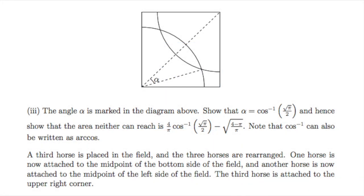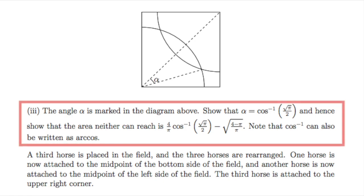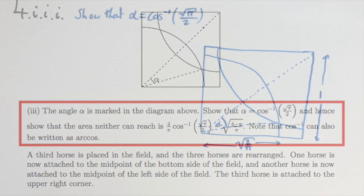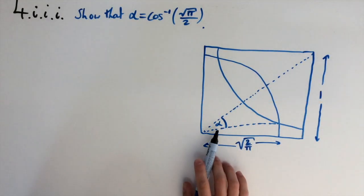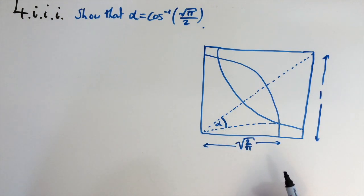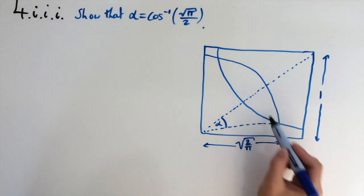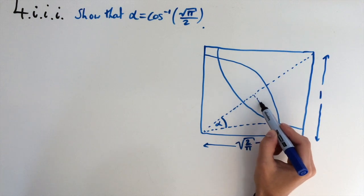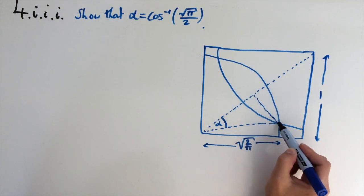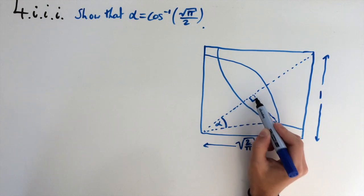For part III, we're shown a diagram with an angle called alpha marked on it, and we need to show that alpha equals cosine to the power of minus 1 of the square root of pi over 2. We then need to find the area that neither horse can reach. The first thing we're going to do is drop a perpendicular from the diagonal that meets the intersection of the two curves.